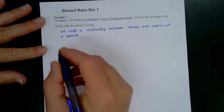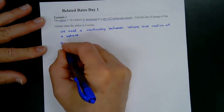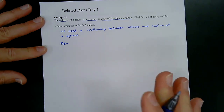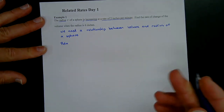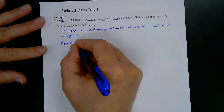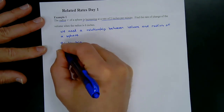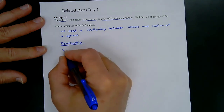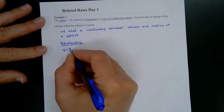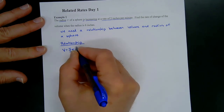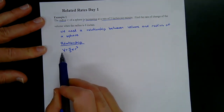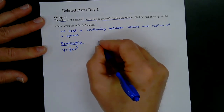The relationship between volume and radius comes from geometry: the volume equals four-thirds pi times r cubed. That relates the radius and the volume.